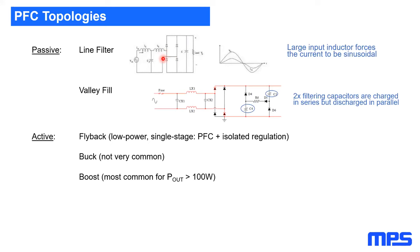Another passive approach is the valley fill circuit. The idea is to split the filtering capacitor placed after the rectifying bridge into two, and with a diode arrangement, charge the capacitors in series from the grid but discharge them in parallel. This enlarges the conduction time of the diode bridge, making the current look less spiky and closer to sinusoidal. It won't bring the power factor to one — at best above 0.7 — but for some applications, especially at light load, this can be acceptable.